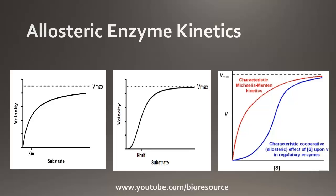Looking at allosteric enzyme kinetics, the enzyme kinetic graph follows a sigmoidal trend. In the presence of an activator, this becomes hyperbolic and follows Michaelis-Menten kinetics. If the effector is an inhibitor, the graph will be sigmoidal rather than hyperbolic.